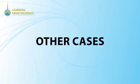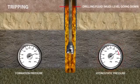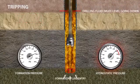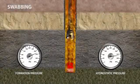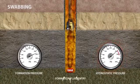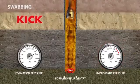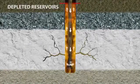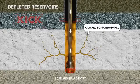There are other cases when a kick can occur. While tripping, if there is a failure to keep the hole full of mud to maintain adequate hydrostatic head, the hydrostatic pressure will be less than the formation pressure, inducing a kick. Swabbing while pulling out of a hole too fast can produce a suction effect, resulting in a decrease in bottom hole pressure large enough to allow formation fluids to enter the wellbore. Additionally, when drilling too fast into depleted reservoirs without proper reinforcement, it can lead to cracking in the walls and losing fluids into the formation, inducing a kick.